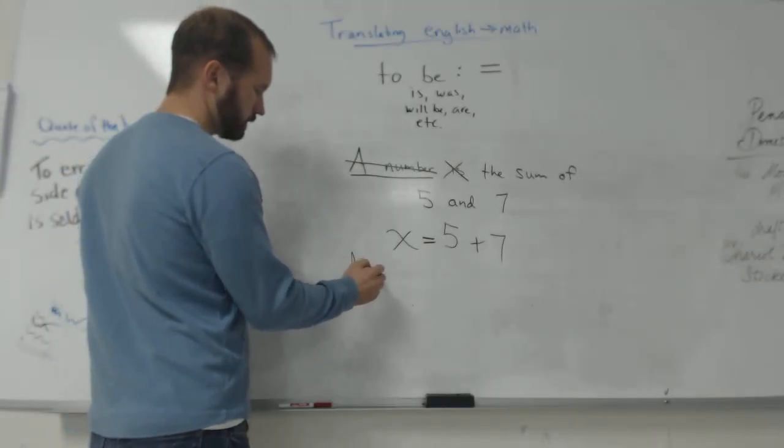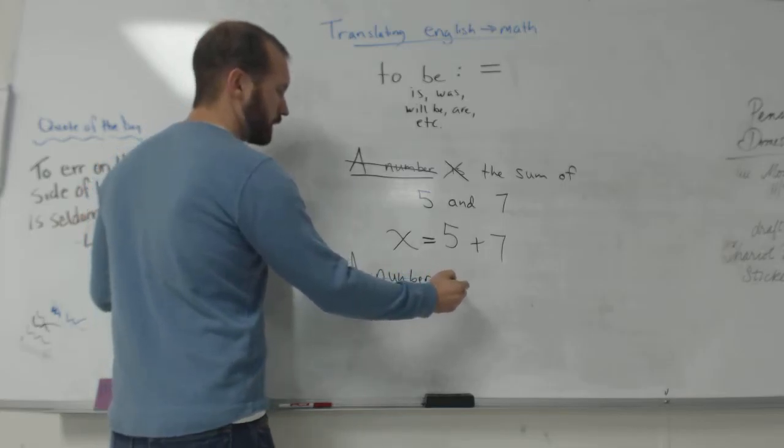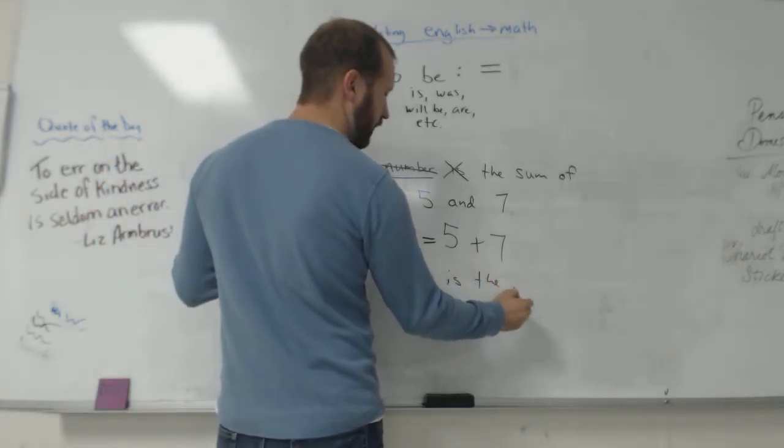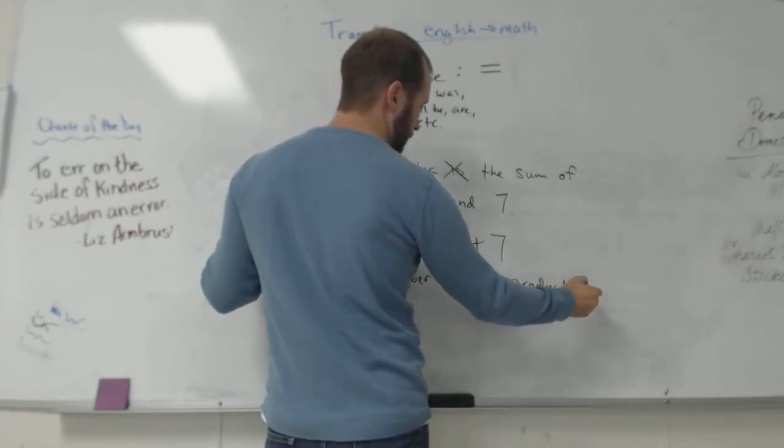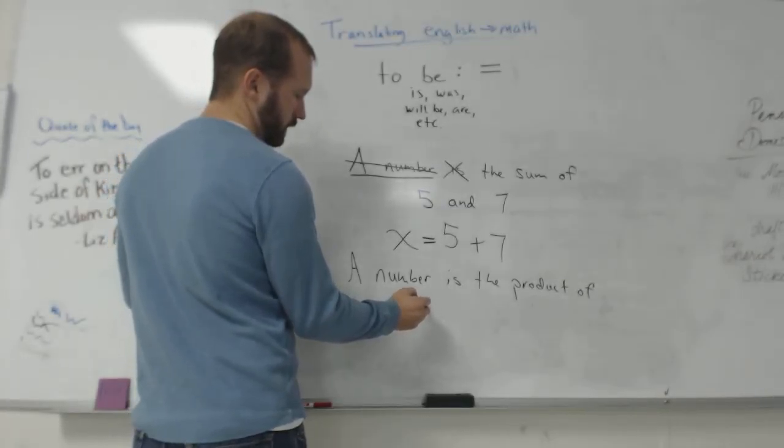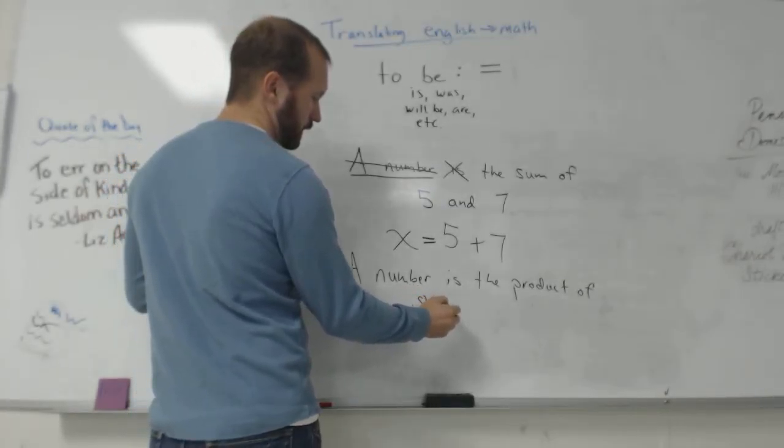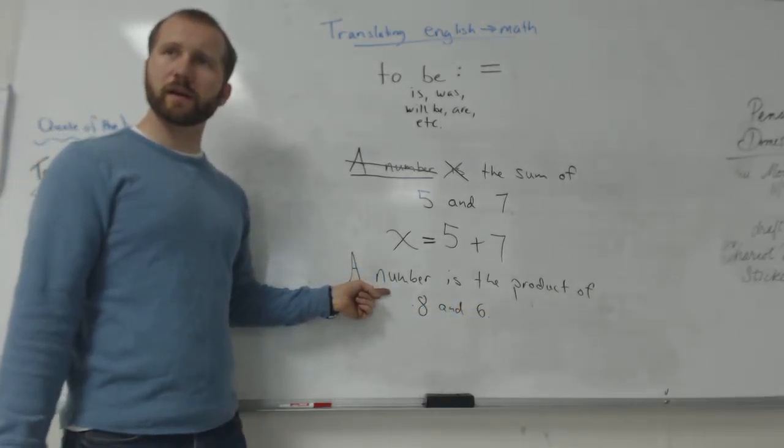A number. Is. The product. Of. Eight. And six. So start at the beginning of the sentence. A number. What do I write for a number?